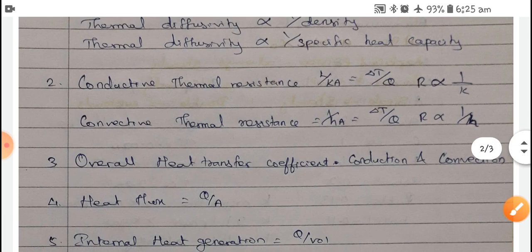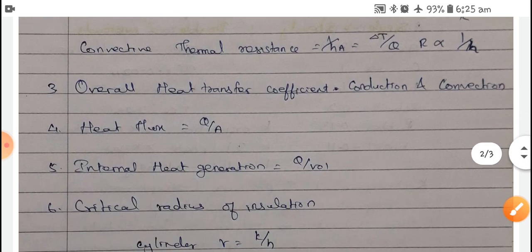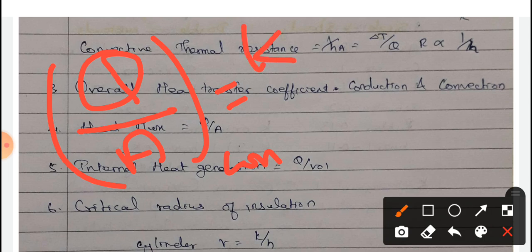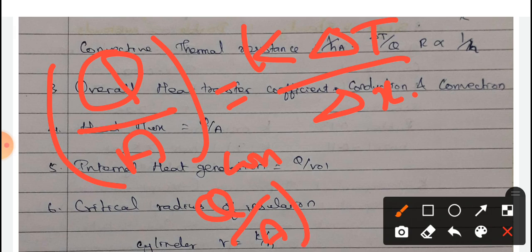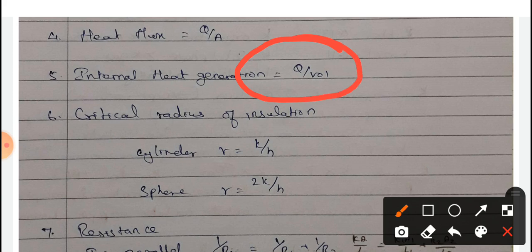The overall heat transfer coefficient depends on both conduction and convection. The heat flux, which is Q/A — for conduction it equals K dT/dX, and for convection it equals H dT. Internal heat generation means heat transfer per volume and is called internal heat generation.